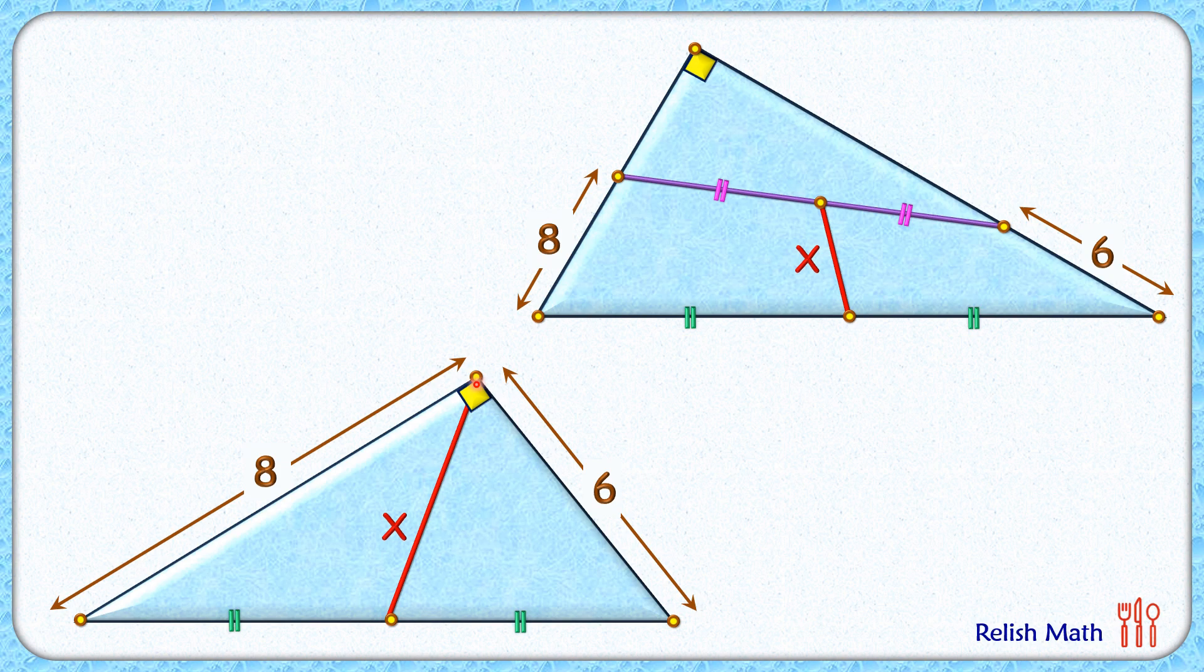Now to solve this is relatively much easier and faster. Applying Pythagoras theorem in this blue right angle triangle, we'll get the hypotenuse length as 10 centimeter.